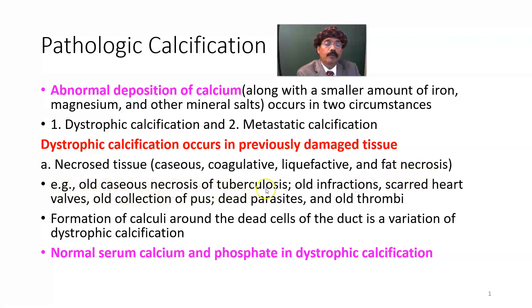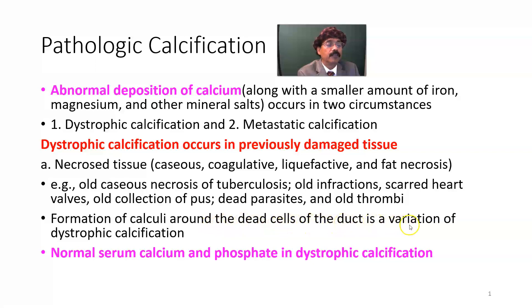Old caseous necrosis of tuberculosis in the lung, mostly along the hilar area of the lung, old infarction, scarred heart valves, old collection of pus, dead parasites, and old thrombi — these are the locations of dystrophic calcification. Formation of calculi around dead cells of the duct is a variation, such as gallbladder, biliary tree, or stones in the salivary duct. Normal serum calcium and phosphate are seen in dystrophic calcification — there is no hypercalcemia or hyperphosphatemia.